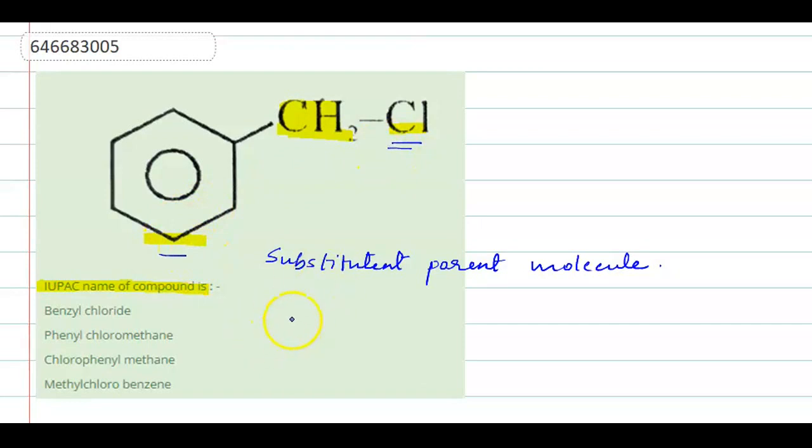So, I can write the name of this compound as chloro-phenyl-methane. Methane is the parent molecule, chloro comes first, after that phenyl, if we go alphabetically. So, the name of this compound will be chlorophenylmethane.